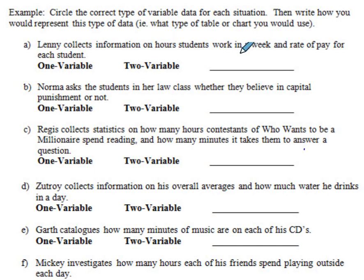So let's read the first question. Lenny collects information on hours students work in a week and rate of pay for each student. Now, can we take an average of this? Probably can't, but there are median or mode. But notice that we have two types of variables, work in a week, so how many hours students work in a week, and the rate of pay for each student. So this definitely is a two variable because we have two numbers that we have to deal with that can be changed.